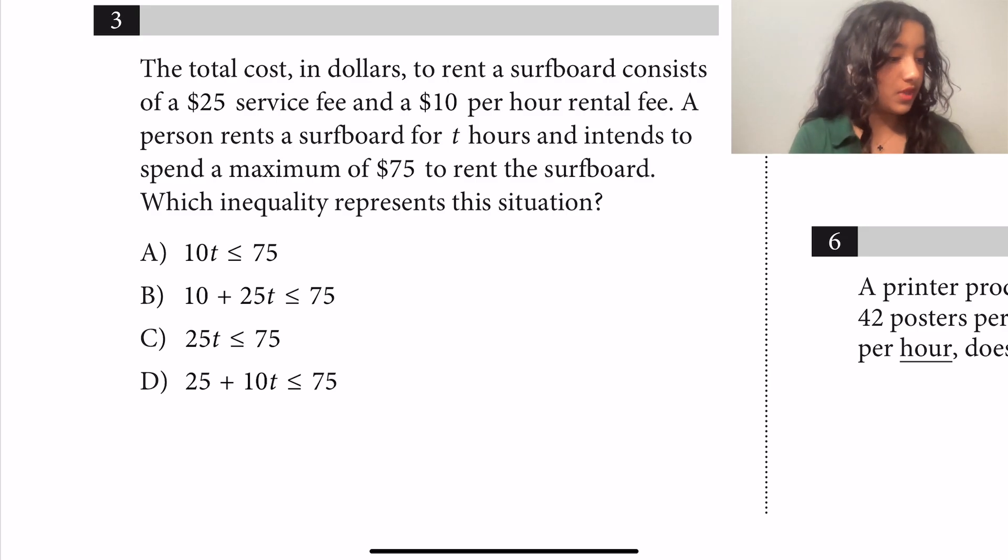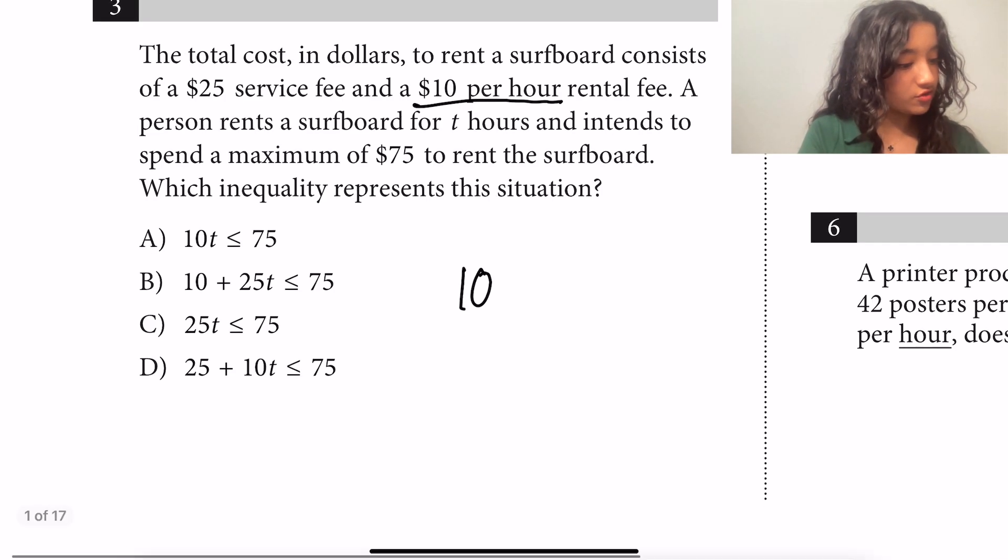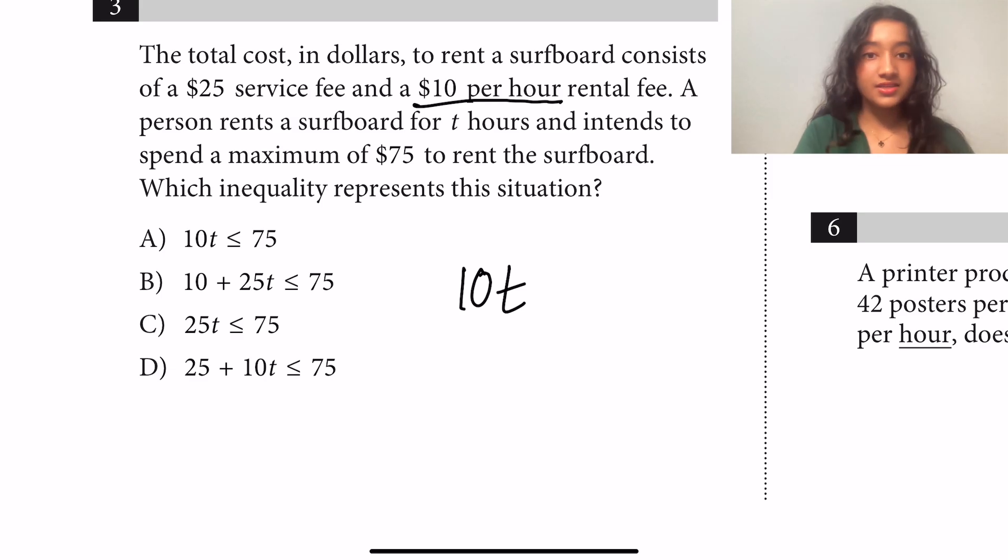Well the key word here that we want to look out for is $10 per hour, so let's start with that. Because we have an hourly rate, it'll depend on the number of hours we have. So if it's $10 per hour and we're renting the surfboard for t hours, then it'll be $10 times the number of hours. Then we also want to add the standard base fee that is the same no matter how many hours.